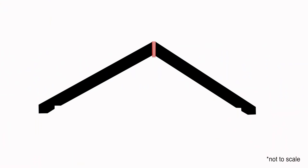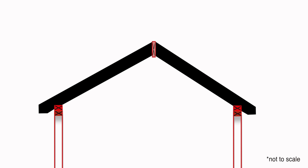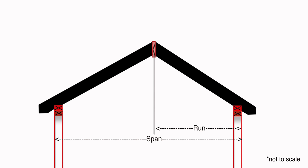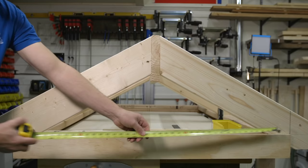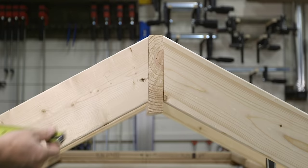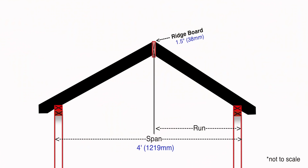As with every roof, you first need to determine the total run of the building, which is half the distance of the span minus half the width of the ridge board material. For our mock-up, the total span or total width of the building is four feet and the ridge thickness is an inch and a half. So half the thickness of the ridge is three quarters and half the span is two feet. Therefore, two feet minus three quarters gives us a total run of 23.25 inches.